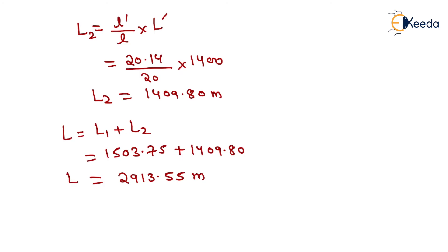That is the actual length between the first and the last point, which is 2913.55 meters. That is all about this numerical. Thank you very much, students.